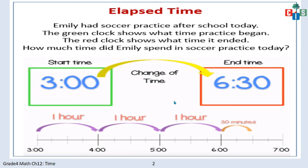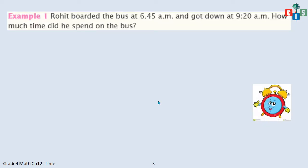Now moving on to more difficult calculations. Here it is easy because the timing given to you is a perfect timing — 1 hour, 30 minutes, 15 minutes — so it will be easy. But we have to calculate the exact minutes and then arrive at the answer. Let's take one more example; it will be clearer to you.